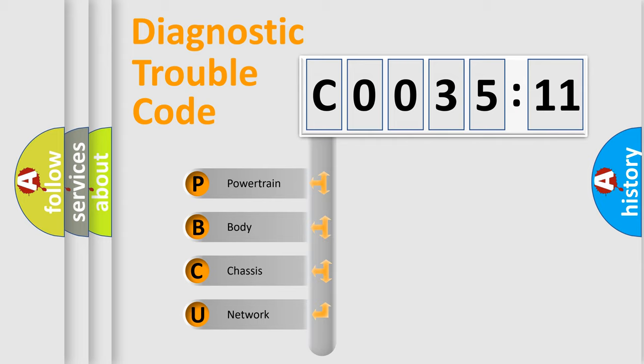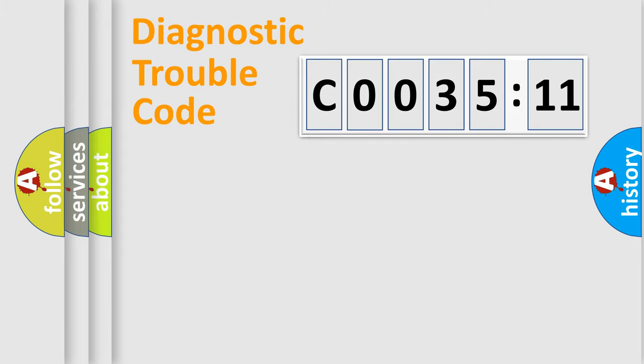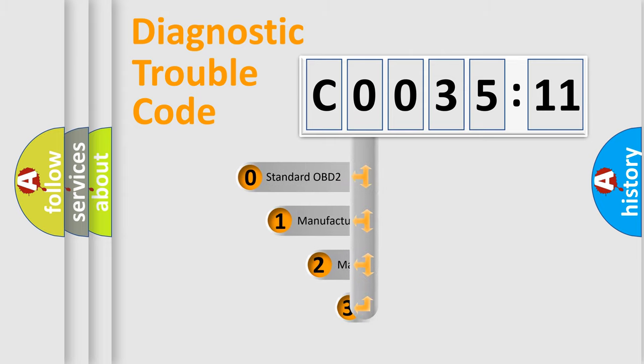We divide the electric system of automobiles into four basic units: Powertrain, body, chassis, and network. This distribution is defined in the first character code.